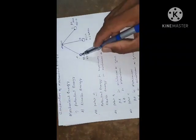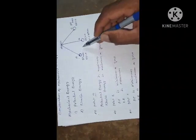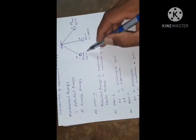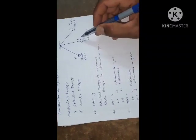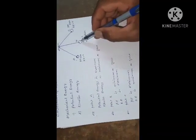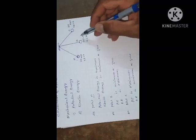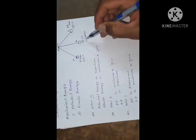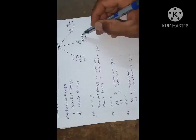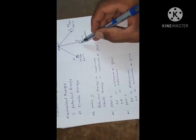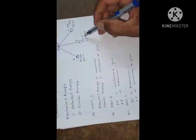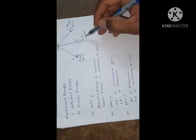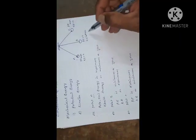As the body moves from A to B, its height decreases and velocity increases. At point B, the height becomes zero but velocity becomes maximum. When height is zero, potential energy is zero. When velocity is maximum, kinetic energy becomes maximum. At point B, the body possesses zero potential energy but maximum kinetic energy.